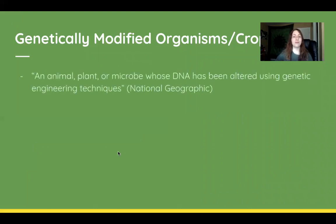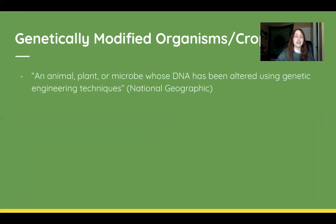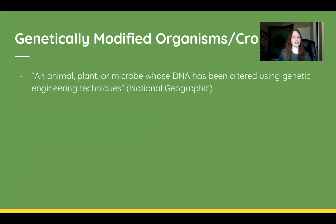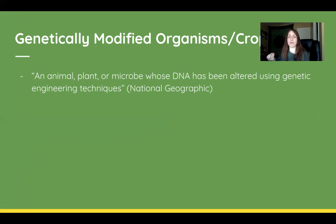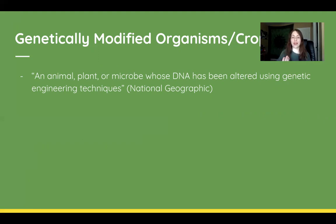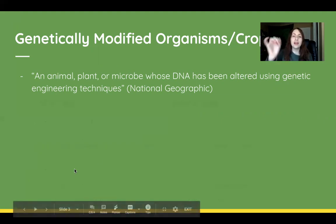According to National Geographic, a GMO is an animal, plant, or microbe whose DNA has been altered using genetic engineering techniques. Basically, it forms an organism or crop that can't naturally occur — they're combining two genes to make something new.